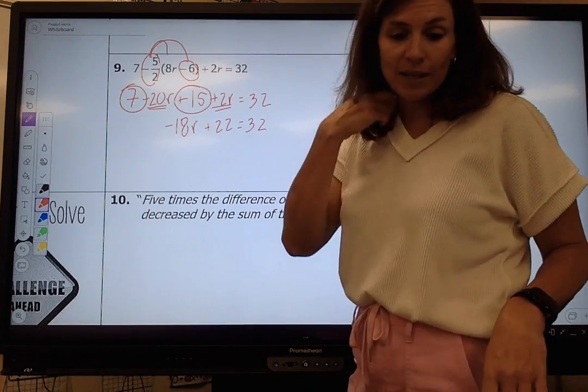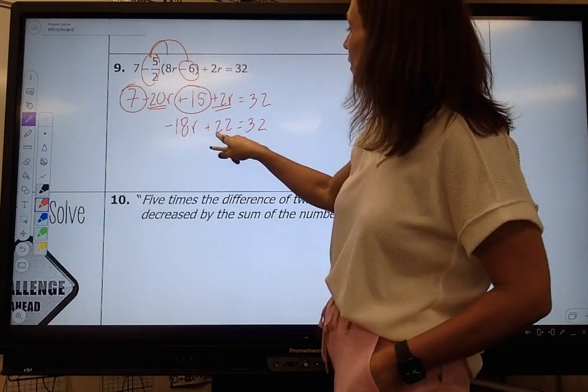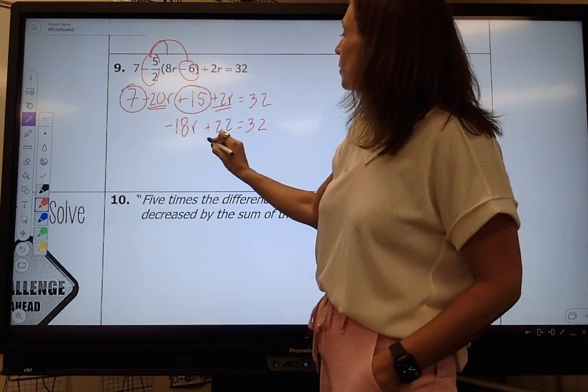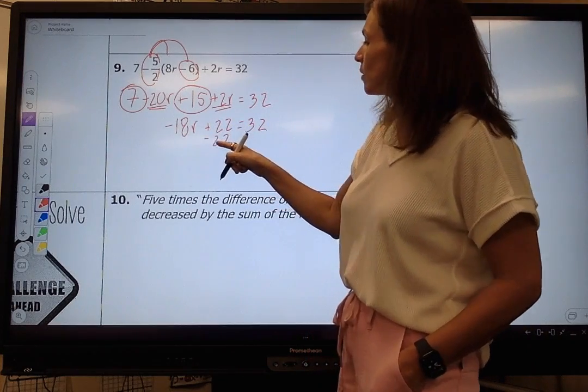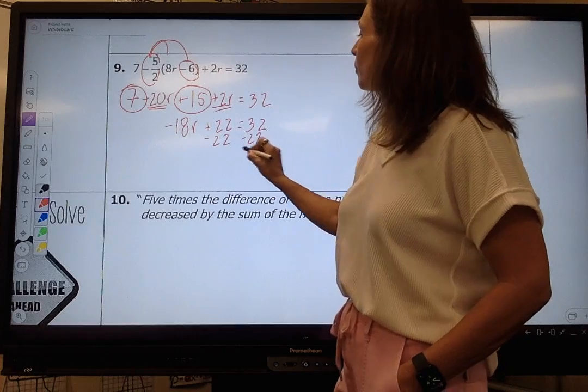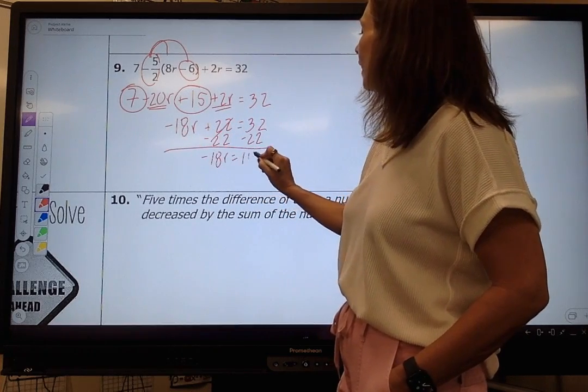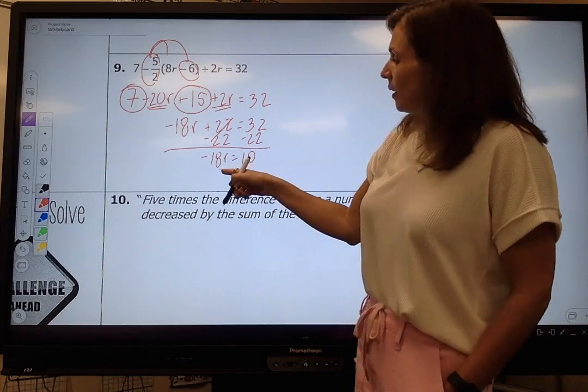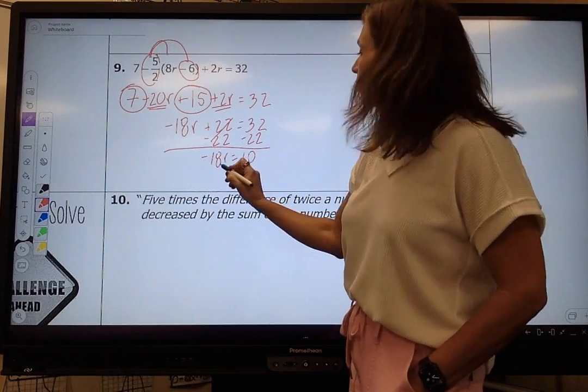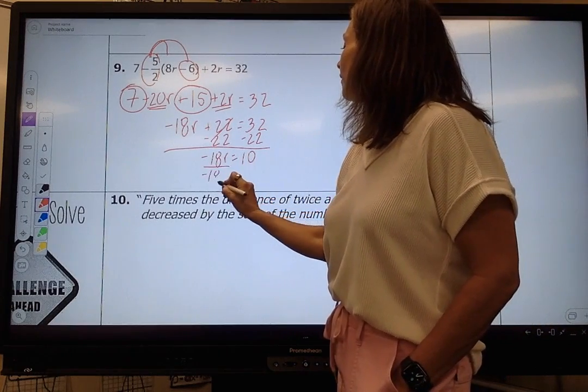Now here is the same thing. I want to get my constant term on the other side. So I'm going to do additive inverse by subtracting 22. The equality property says I need to do it on both sides. So I have negative 18R equals 10. I need to get R by itself. So I'm going to divide both sides by a negative 18.